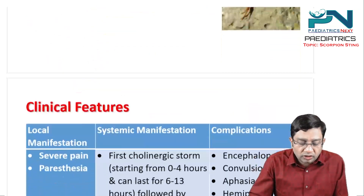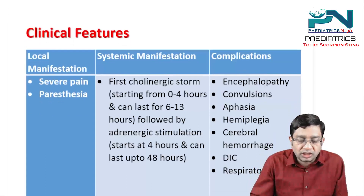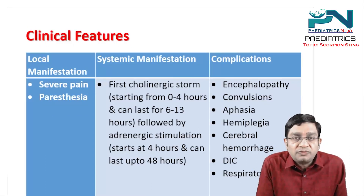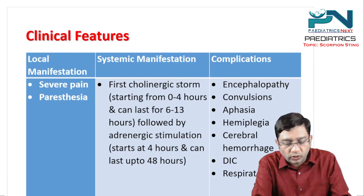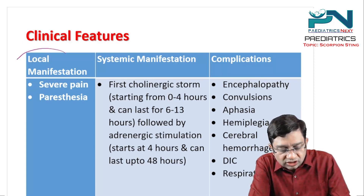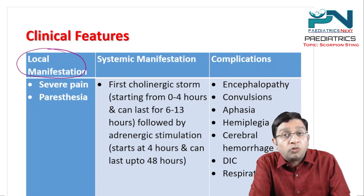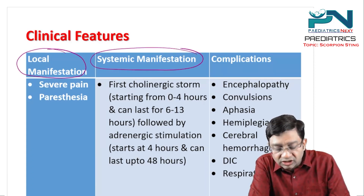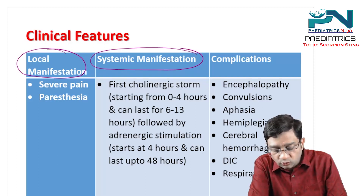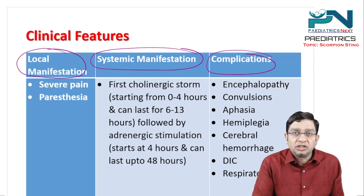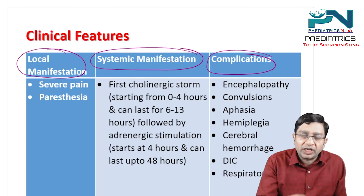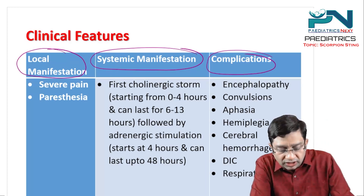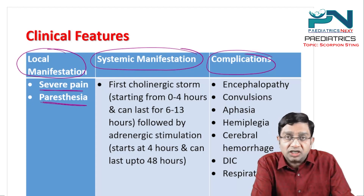If you particularly go for the clinical features, they can be segregated into three: one can be the local manifestations, one can be the systemic manifestation, and one is the complication. The local manifestation — where there is a bite, at that place there can be severe pain and there can be paresthesia.